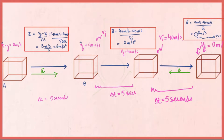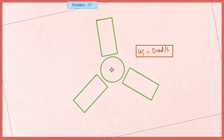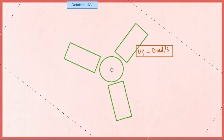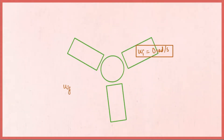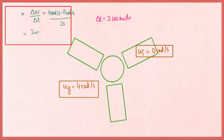Now let's take the example of a fan. Initially the fan is at rest with angular velocity omega_i equal to zero. As it rotates, it speeds up until it reaches maximum angular velocity omega_f of 4 radians per second in a time period of 2 seconds. Like linear acceleration, angular acceleration is the time rate of change of angular velocity. So angular acceleration equals 4 minus 0 over 2 seconds, giving 2 radians per second squared.